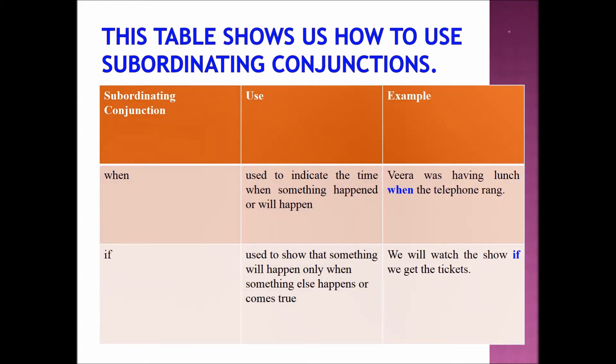This table shows us how to use subordinating conjunctions with examples. WHEN is used to indicate the time when something happened or will happen. Example sentence: 'Veera was having lunch when the telephone rang.' IF is used to show that something will happen when something else happens. Example sentence: 'We will watch the show if we get the tickets.'